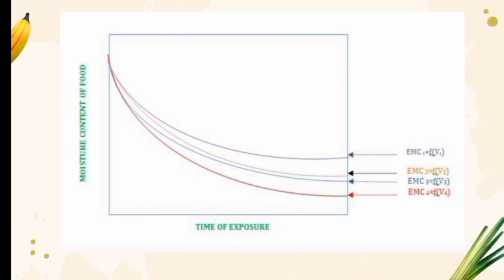A change in chemical composition can affect the EMC of food products. Foods with high oil content absorb less moisture from the surrounding air. Also, previous moisture adsorption and desorption history of food affects EMC values. Plotting different EMC values with relative humidity at constant temperature results in a sigmoid-type shaped curve.